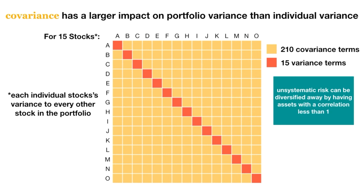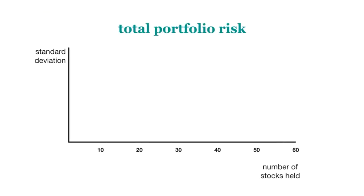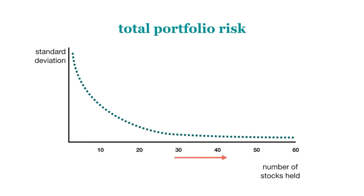Because smart investors can so easily do away with unsystematic risk by diversifying their portfolios, investors do not even expect to be compensated for it. In the graph here, we can see that the risk reduction effect is most prominent as we add the first 30 assets to our portfolio. In theory, adding another asset that has low correlation with other assets in the portfolio can decrease the portfolio variance. But in reality, after 30 assets, there isn't much of an additional effect.